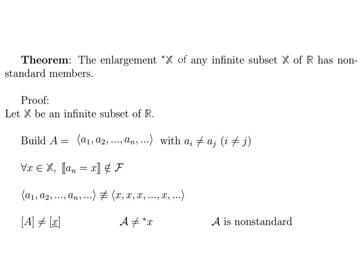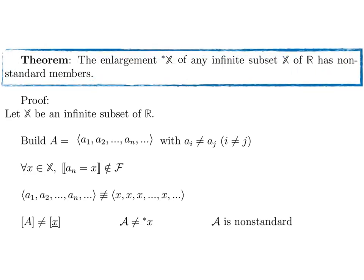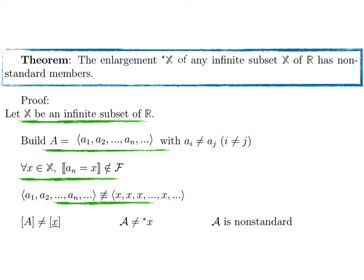Here is an important theorem to understand and remember: the enlargement star X of any infinite subset X of R has non-standard members. The proof starts by considering X as an infinite subset of R. We build a sequence a with elements all different from one another. Then it is easy to show that for any real x, the set of integers such that a_n equals x is finite and therefore not in the ultrafilter. It follows that the sequence a is not equivalent to the constant sequence x, so the hyperreal number cannot be written as an extension of a real number. Hence, a is non-standard.